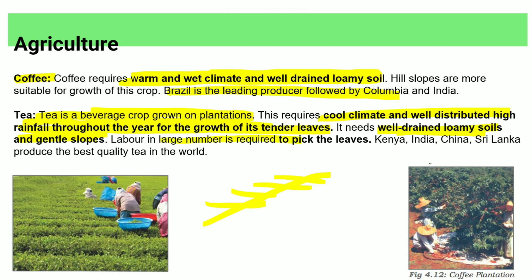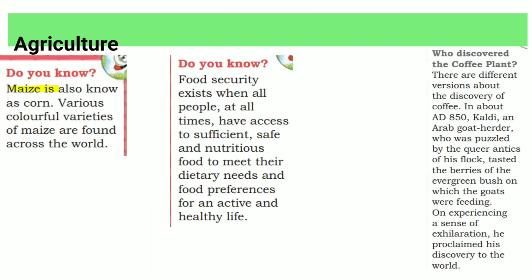Tea cultivation requires a large number of labourers. Leading producers of tea are Kenya, India, and China. Interestingly, coffee was discovered by an Arab goat-herder who noticed his goats became energetic after eating berries from certain bushes, and he proclaimed his discovery to the world.